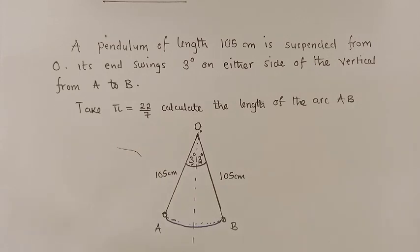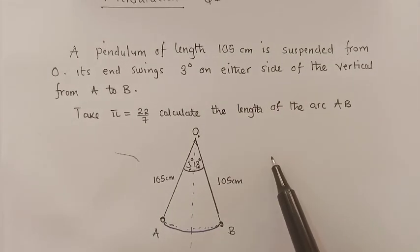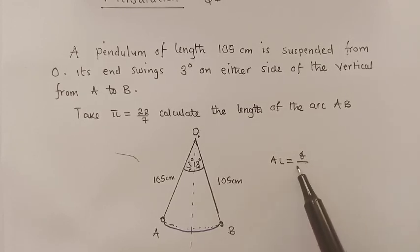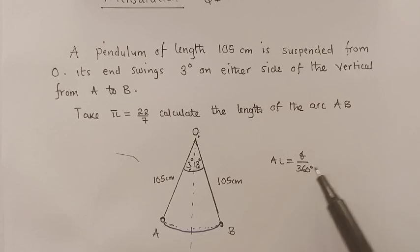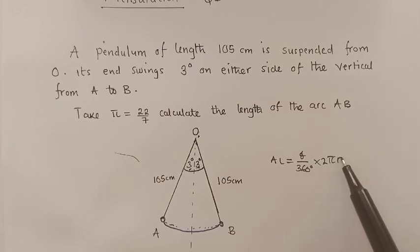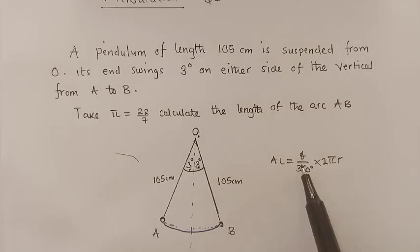Under mensuration, when you want to calculate the length, the formula is very easy. You just say the arc length is equal to theta over 360 degrees times 2 pi r. Our theta will be the